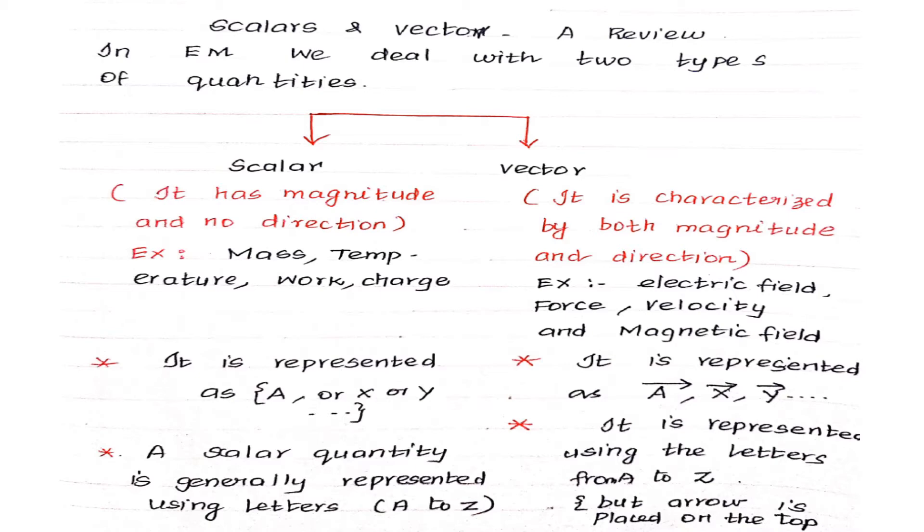Next, we are going to see scalars and vectors. In electromagnetics, we deal with two types of quantities. The first one is scalar quantity and second one is vector quantity. The scalar quantity has magnitude and no direction. For example, mass, temperature, work, charge, all are coming under scalar quantity.